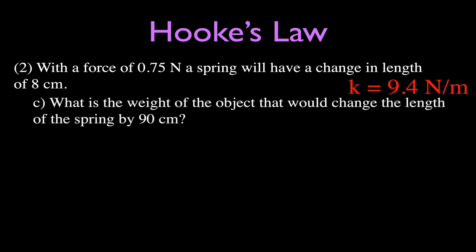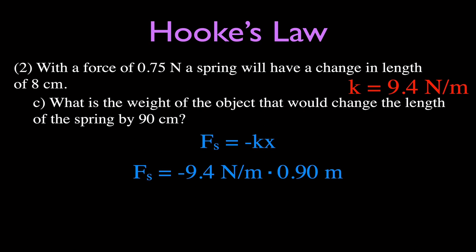For part C, using the same spring (k = 9.4 N/m), what weight would cause a change in length of 90 centimeters? Since it takes 9.4 newtons to change it by 1 meter, and 90 centimeters is close to 1 meter, the answer should be close to 9.4 newtons. Solving for force: 9.4 times 0.9 meters gives 8.5 newtons — which is 90% of 9.4, as expected. By Newton's third law, that's also the weight applied to the spring.